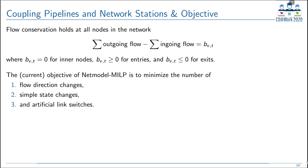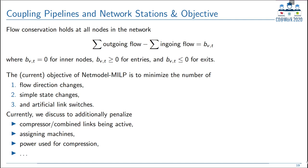We also discuss penalizing compressor and combined links being active without compression occurring — to avoid using compressing arcs like shortcuts. Additionally, we penalize the assignment of machines (you only want to use them if necessary) and the power used for compression, since compression requires energy and costs money. There are many other ideas for penalization terms and completely different objective formulations that we are also exploring.